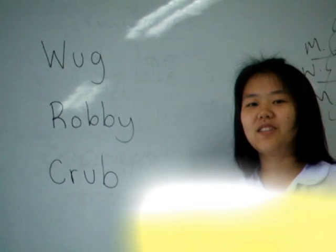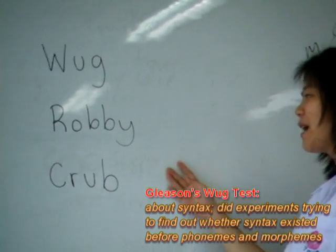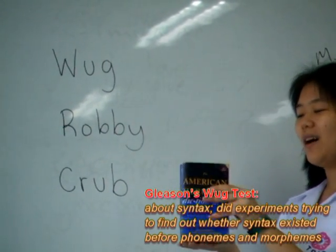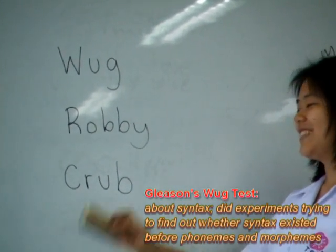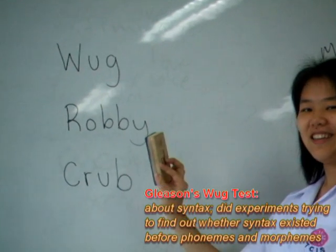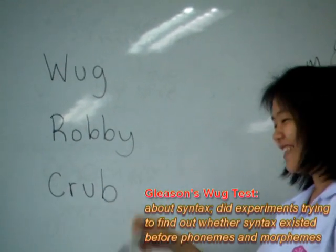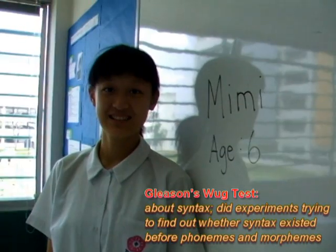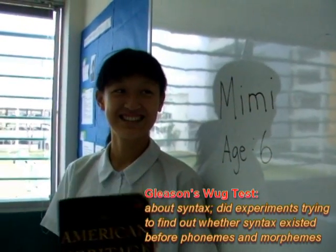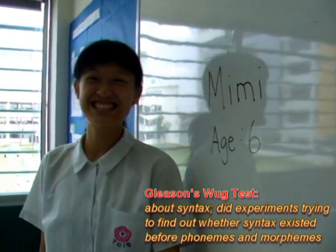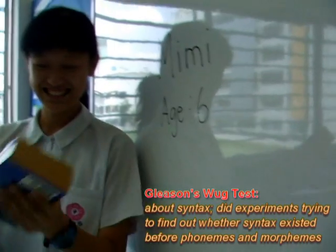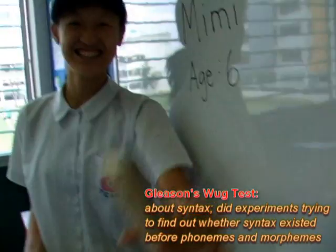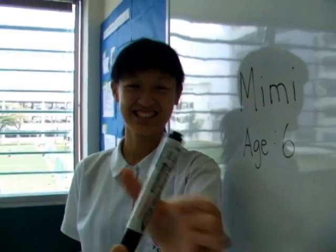Good morning, students. These are the three vocabulary words we are going to learn today. This is the log, this is the robbie, and this is the crub. What is this? What is this? What is this? What is this?